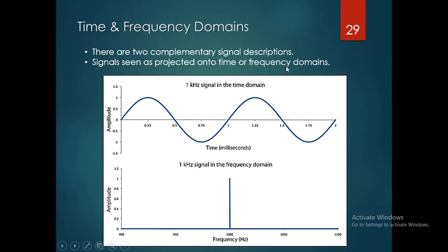Once we go into signal processing, there are two types of domains: time domain and frequency domain. There are two complementary signal descriptions. In the time domain, the x-axis is time and the y-axis is amplitude of the signal. In the frequency domain, the x-axis is frequency and the y-axis is amplitude.